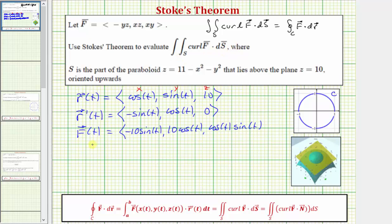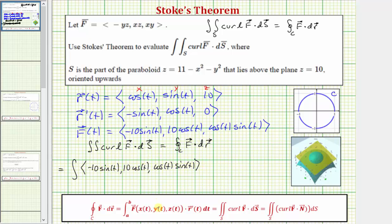The given surface integral is equal to the line integral along the closed curve c of f dot differential r, which equals the integral from a to b of f of t dotted with r prime of t dt. The values of t that trace out this unit circle counterclockwise on the plane z equals 10 go from zero to two pi, all the way around the circle.